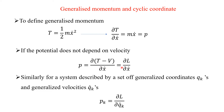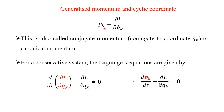So P is equal to the partial derivative of L with respect to x-dot. Similarly, for a system described by a set of generalized coordinates q_k and generalized velocities q_k-dot, we have P_k equal to the partial derivative of L with respect to q_k-dot. This is using the generalized coordinate system. P_k is called conjugate momentum — conjugate to coordinate q_k — or it is called canonical momentum.